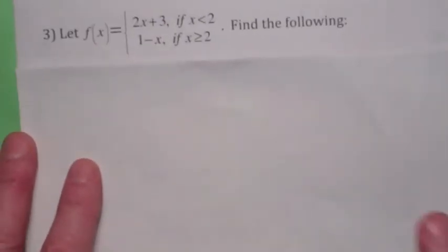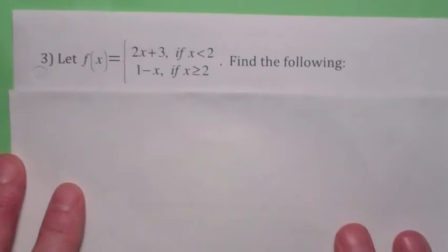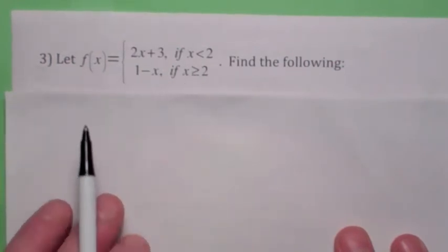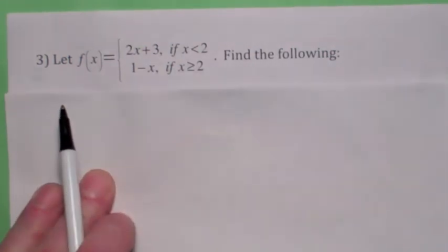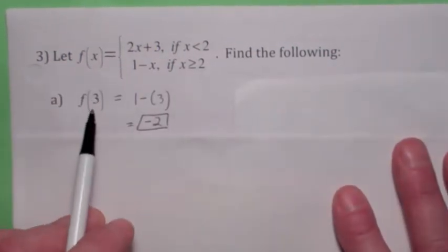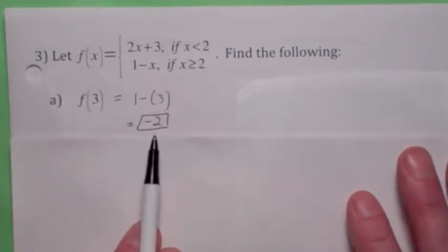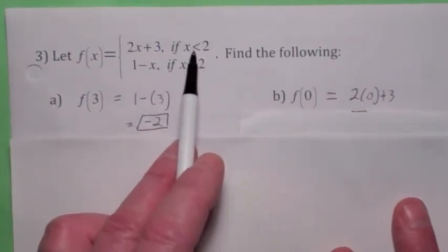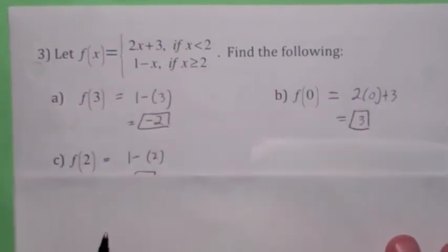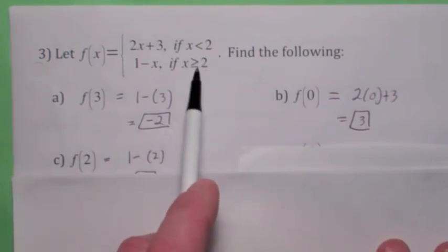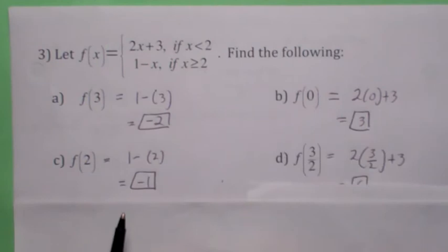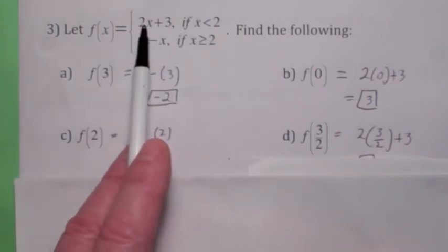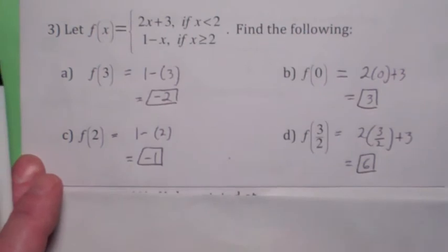On some of your homework, you have a function like this. This is an example of a piecewise function. The function, the y value will be this expression if x is less than 2, it's this expression if x is greater than or equal to 2. So it depends on what x is. In the first one, if x is greater than 2, which is 3, you plug into this one. So it becomes 1 minus 3, which is negative 2. On the second one, f of 0, remember what this means? The value of y when x is 0. Since x is less than 2, you plug into this formula. So you get 3. f of 2 is right on the borderline. So it would equal 2. So it would be 1 minus 2, which is negative 1. f of 3 halves would be, let's see, what do we have here? 3 halves is less than 2, so you plug into this one. 2 times 3 halves plus 3. I get 6 on that one. Let's keep on going.